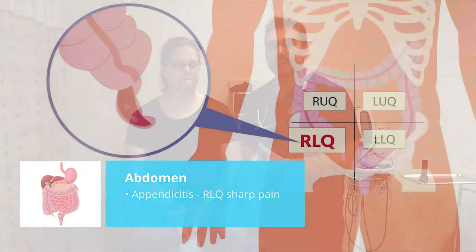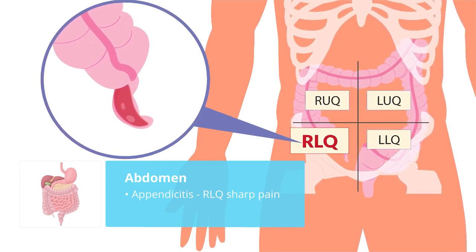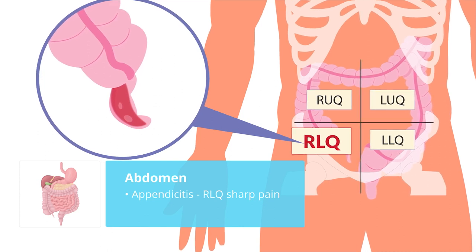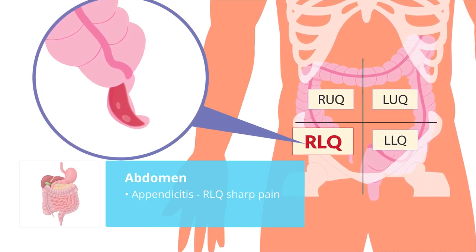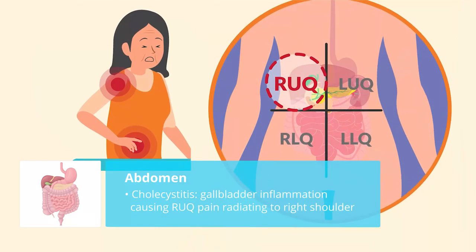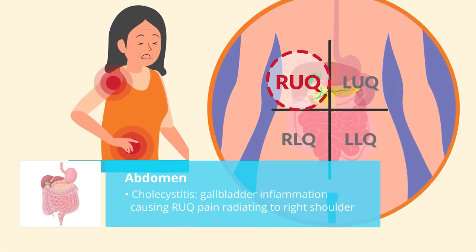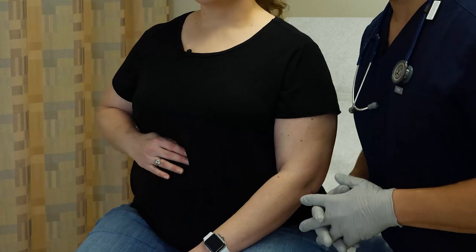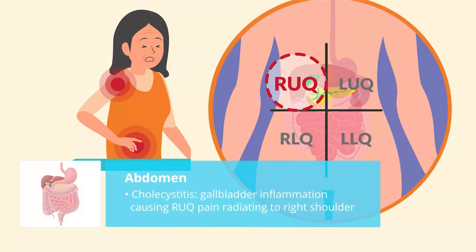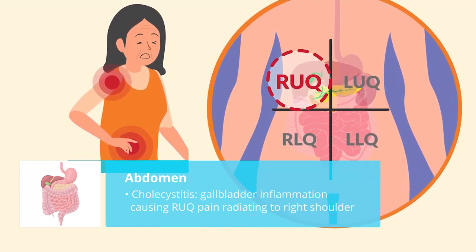The second biggest thing is the right lower quadrant — appendicitis. If the patient has sharp pain in the right lower quadrant with rebound tenderness, that is typical of appendicitis. Number three is cholecystitis, which is gallbladder inflammation, located in the right upper quadrant. This pain radiates to the right shoulder, so if you hear right upper quadrant pain radiating to the right shoulder, it's cholecystitis.